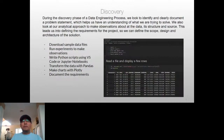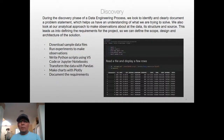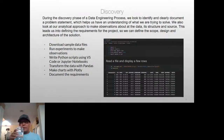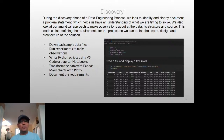In the discovery process for a data engineering project, we need to identify the problem statement and clearly document what we're trying to do and how we're going to solve it. We need to understand what the data looks like, its structure, the frequency of the data, and what the business needs to resolve by using this information. For analytical purposes, we download sample files, run experiments with Python scripts in VS Code or Jupyter notebooks, use pandas for data transformation and Plotly for building charts, and document the requirements.